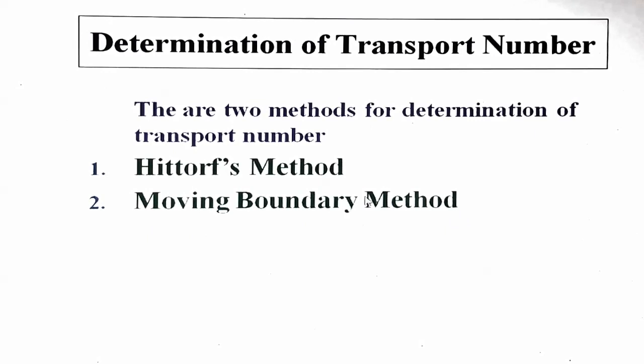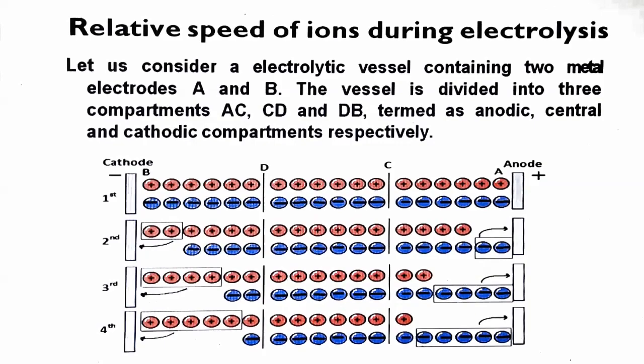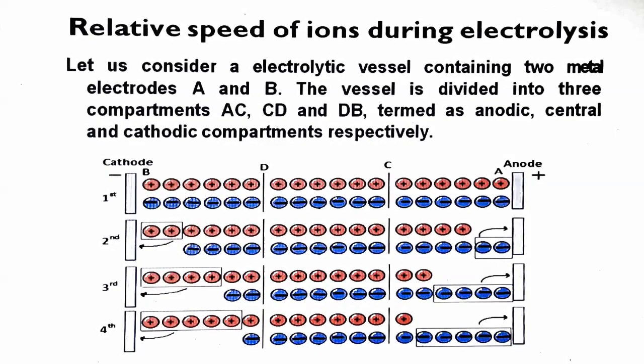The moving boundary method is a frequently asked question in GU exams. The Hittorf method is based on the relative speed of ions during electrolysis. In this method, we consider an electrolytic vessel containing two metal electrodes — a cathode and an anode — and the vessel is divided into three compartments: BD is the cathodic compartment, DC is the central compartment, and CA is the anodic compartment.